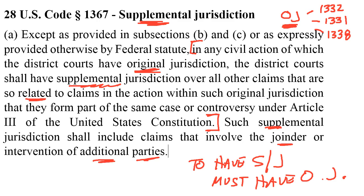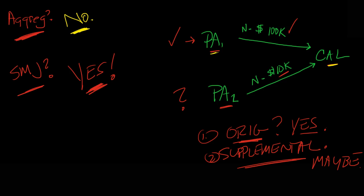Going back to our hypo: do we have original jurisdiction? Yes. Do we have supplemental jurisdiction? It appears yes. We have original jurisdiction, and regarding the supplemental claim — PA2 versus California — is there a relationship between the original claim and the supplemental claim? Yes. The California defendant did something causing injury to both PA1 and PA2. Imagine a car crash — the same incident injured two plaintiffs. That's clearly related. Original jurisdiction exists, and the supplemental claim is extremely related, giving us a basis for supplemental jurisdiction.